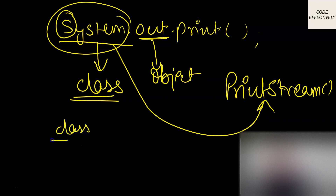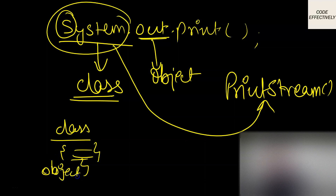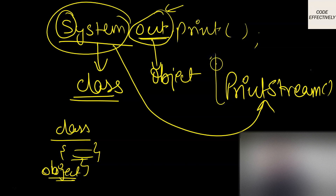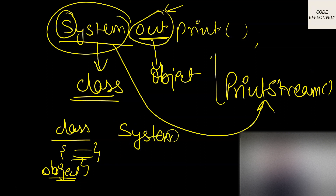In order to call the PrintStream method, we need to create an object. Whenever we create a class, if we need to call its methods, we have to make objects. The name of that object is 'out'. So my class System calls the method PrintStream, and the object name is 'out'. Within PrintStream, we have the print method to print output.